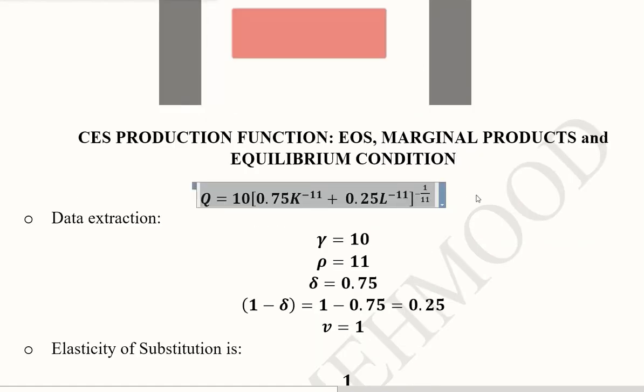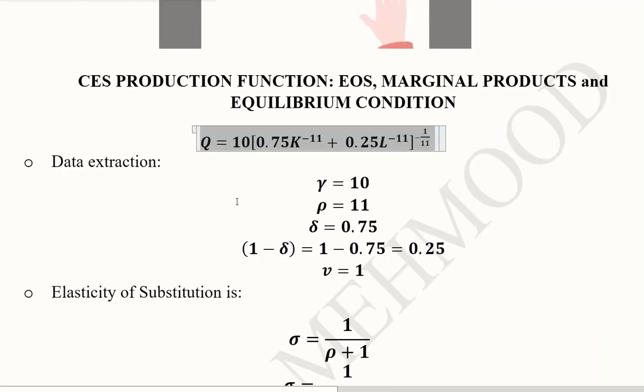Let's get to the numerical example that we have. We basically have this given numerical form of the CES production function. If we have the given form in a numerical way, we can extract the data by comparing it with the standard form. This is the value of gamma, this is the value of delta, this is the value of 1 minus delta, this is the value of rho.